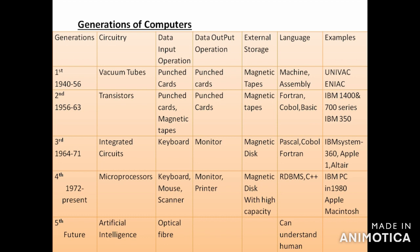If asked about examples like IBM System or Apple or Altair, you should be able to answer that these are computers of the third generation. For output devices: monitors and printers were introduced in the fourth generation from 1972 onwards. Prepare a table, learn it thoroughly — anything may be asked. This was all about the generations of computers.